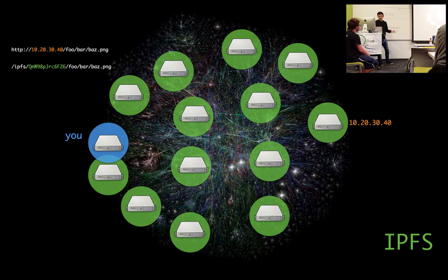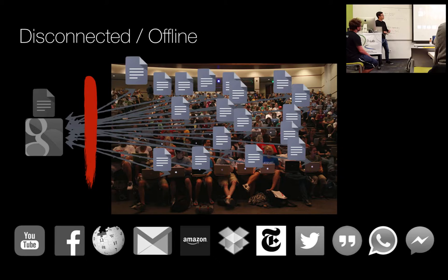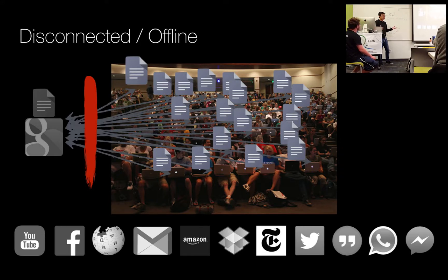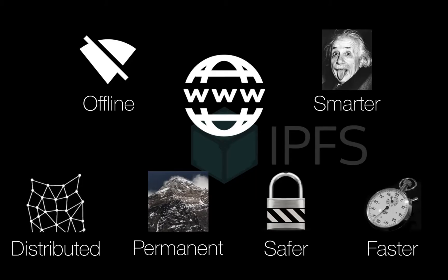This leads to the example of if you're in a classroom and everybody is on Google Docs, it doesn't make sense that we all have to ping Google and come back just to collaborate in one room. When we're geographically together and the internet goes down, we should still be able to collaborate. There should be no reason we have to connect to Google and come back. So IPFS is meant to be distributed, permanent, safer, faster, smarter, and it should work offline.